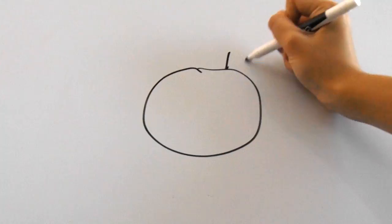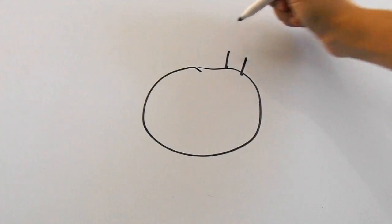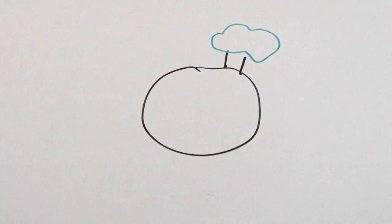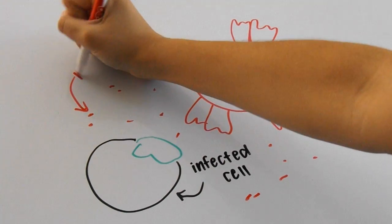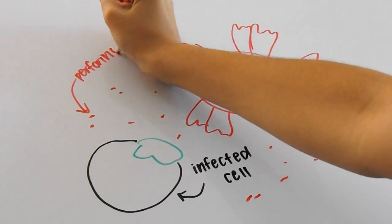Alright, so once the fragments bind to the MHC molecules, they go up to the surface and display the fragments. The displayed fragments can bond with any matching receptor on any cell, such as a T cell. When this happens, the T cell can release proteins called perforins that kill infected cells.